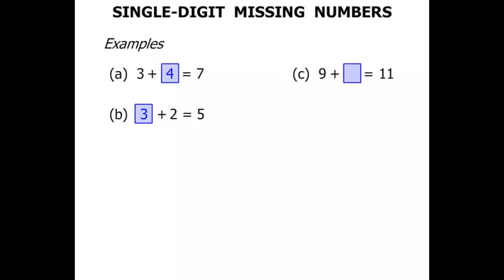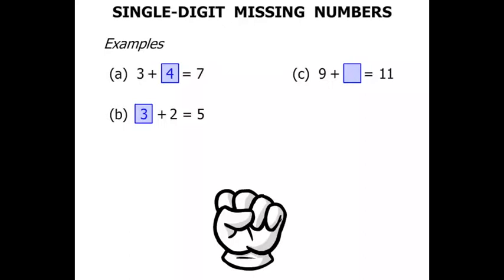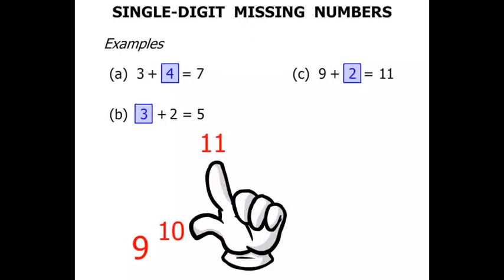9 plus something equals 11. So there's our hand. Again we start with the number we've got. There's 9. We need to get to 11. So in our mind we think 9 and then 10, 11. So we only needed 2 more to get to 11 didn't we?